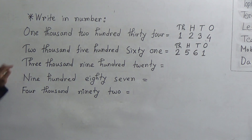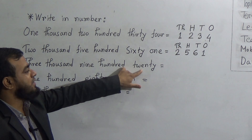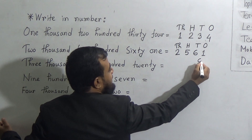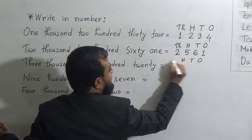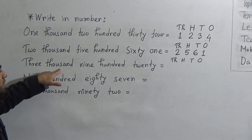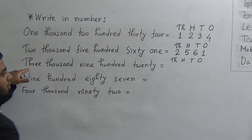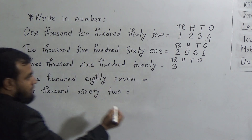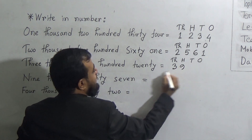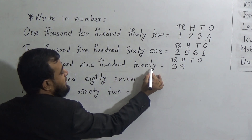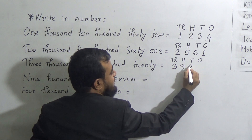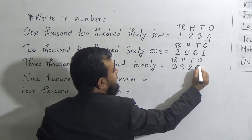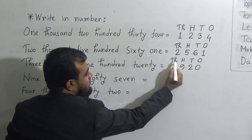The next number is 3,920. We write the places: ones, tens, hundreds, thousands. 3,000 means we fill the thousands place with 3. Then 900 means we fill the hundreds place with 9, making 3,900. 20 means 2 goes in the tens place. There is no number in the ones place, so we fill it with 0. This gives us 3,920.